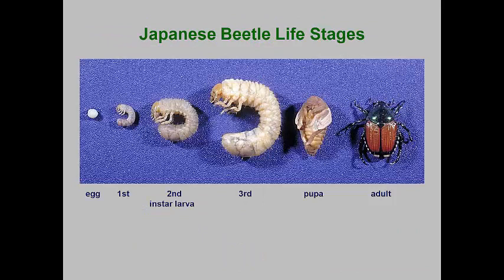The adult Japanese beetles are only one stage of this pest. Like all beetles, Japanese beetles have a complete life cycle and the larval stage is called a white grub. These robust, C-shaped larvae feed on the roots of turf grasses and other plants where they can also cause extensive damage. Since the adults can fly considerable distances, seeing adult beetles doesn't automatically mean that the nearby turf will be damaged.